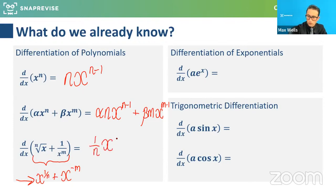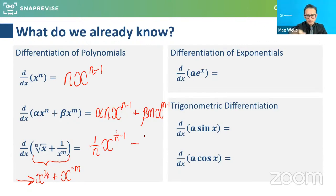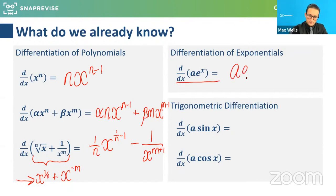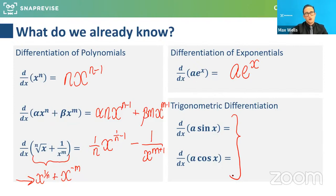Once rewritten using index notation, differentiation follows the same process — multiply by the power and drop it by one. So x^(1/n) differentiates to (1/n)·x^(1/n - 1), and x^(-m) differentiates to -m·x^(-m-1), which is the same as -m over x^(m+1). For example, if it was to the minus four it goes to minus five, which is effectively what's happening in the denominator.